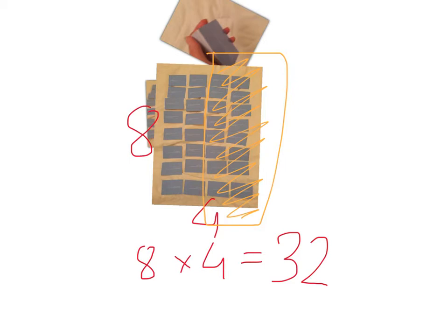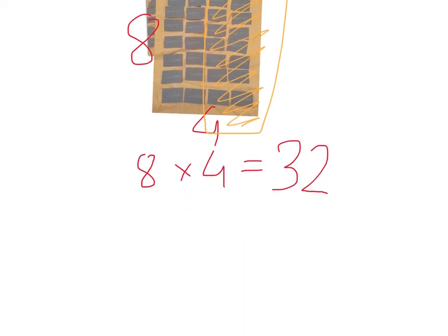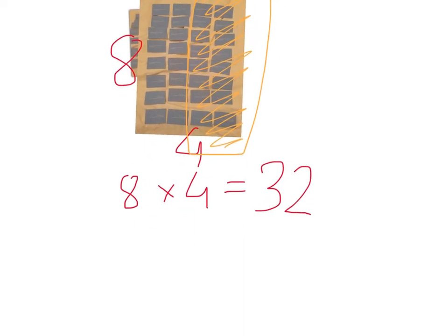Now let's count how many we have: 1, 2, 3, 4, 5, 6, 7, 8, 9, 10, 11, 12, 13, 14, 15, 16. So now we see that the answer — 32 divided by half is 16.